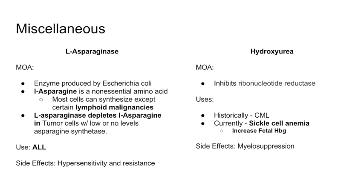L-asparaginase is an enzyme found in E. coli. Asparagine is a non-essential amino acid in normal cells, but some tumor cells lack asparagine synthase and cannot make their own asparagine. Giving L-asparaginase depletes all asparagine. Normal cells are unaffected because they have asparagine synthase, but tumor cells become depleted of L-asparagine and are destroyed. It can be used in ALL and may cause hypersensitivity.